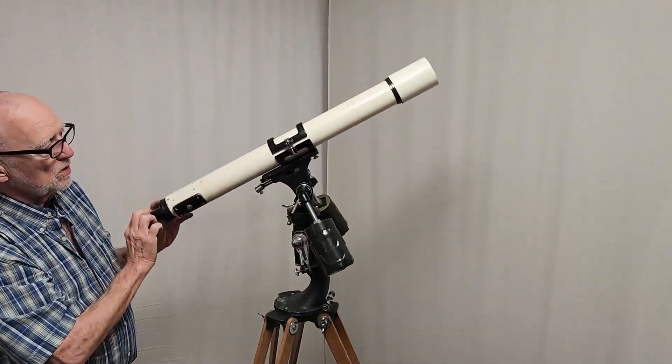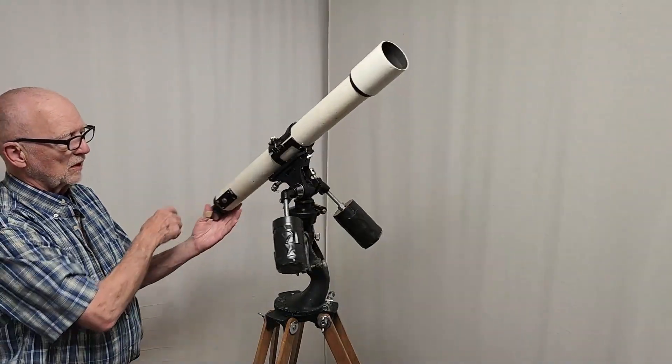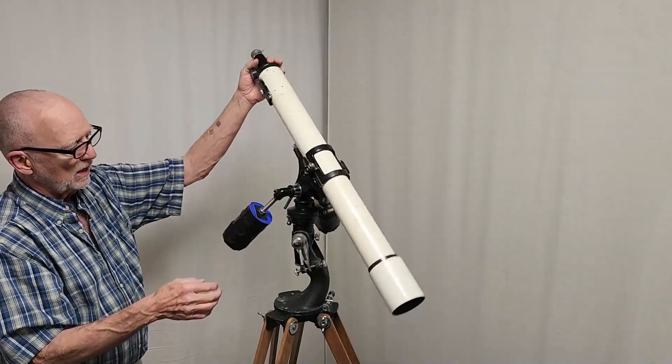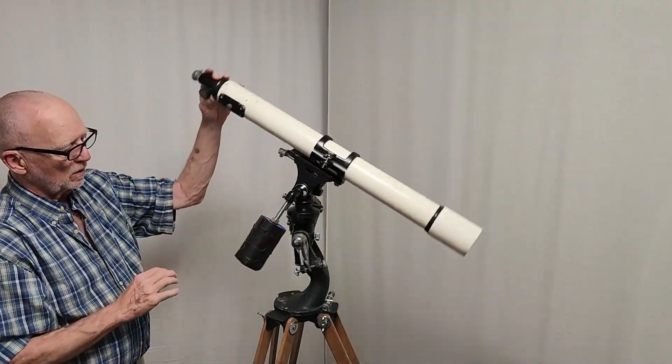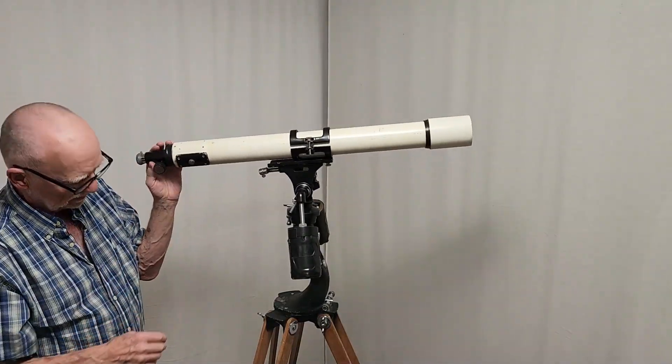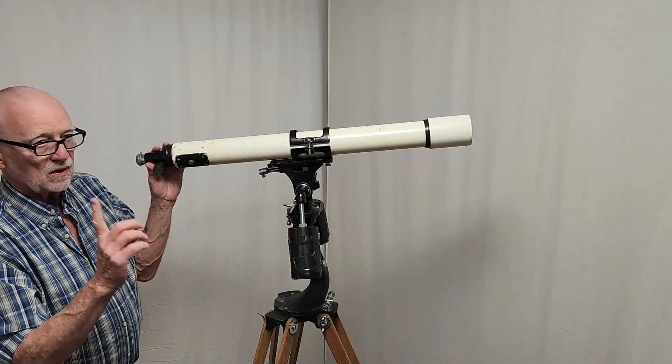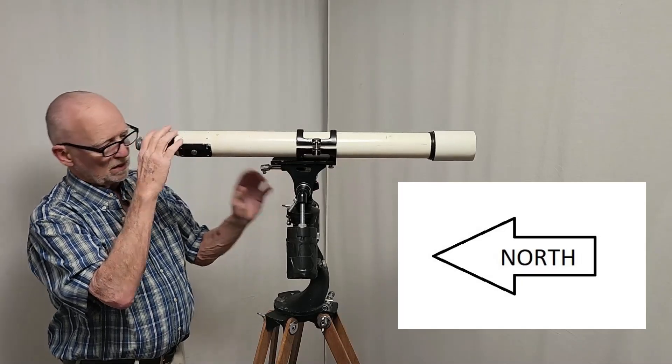The first thing I want to show you is here in alt-az mode. Obviously, you've got very good flexibility. You just keep the weights down, counterbalancing the tube perfectly, no matter where you are. So that's that. Now, let's assume that north is behind me and change the latitude.